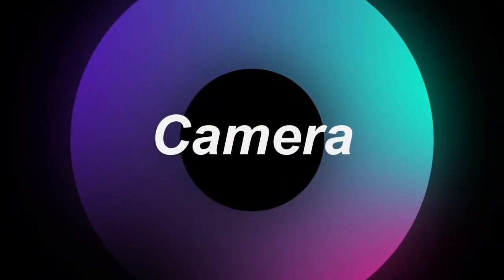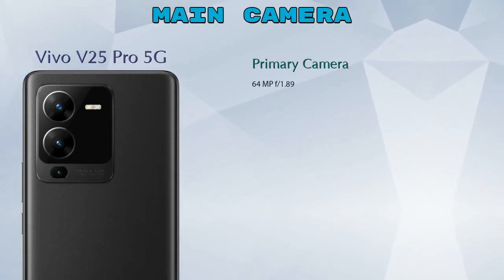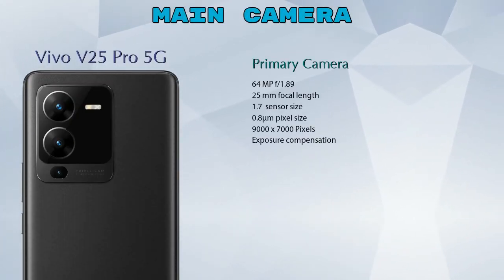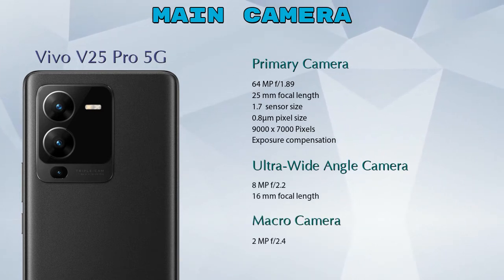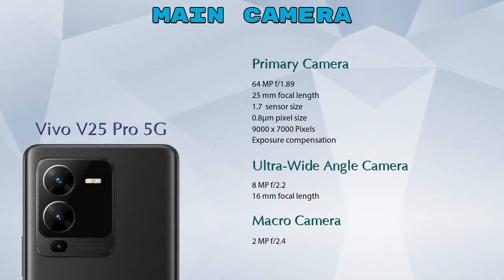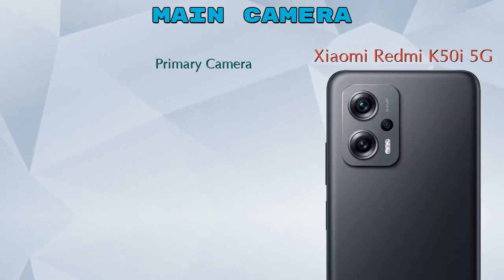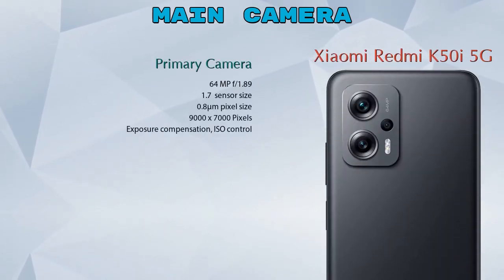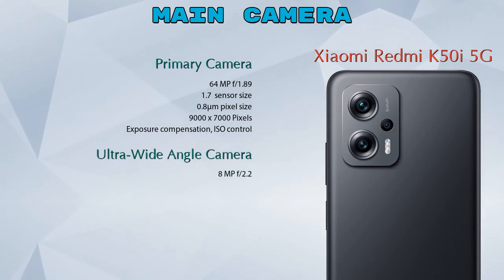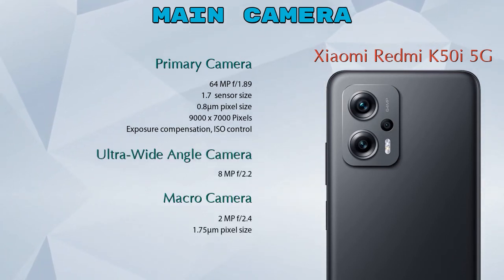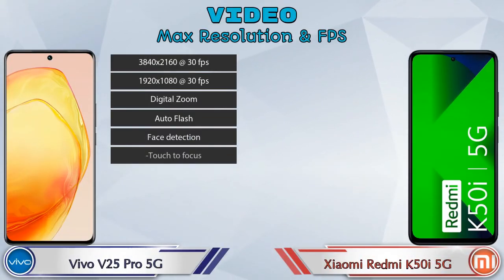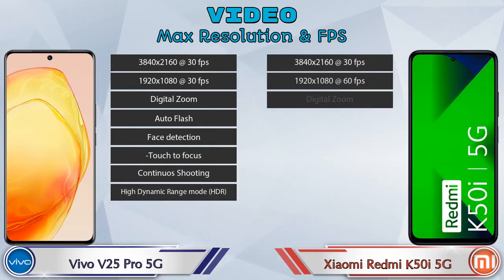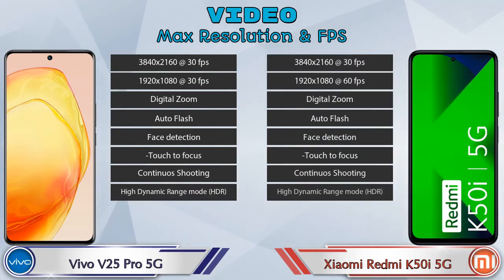Let's see the details about cameras. For the rear camera, V25 Pro 5G has three cameras: a primary camera, ultra-wide angle camera, and macro camera. Redmi K50i 5G also has three cameras: primary, ultra-wide angle, and macro. For video, V25 Pro 5G has 8 and Redmi K50i 5G has 9 different types of features available.